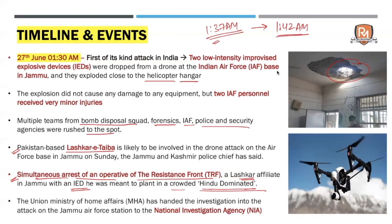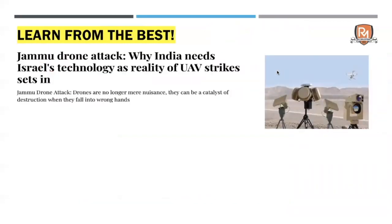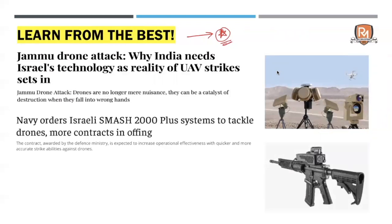After this attack happened, the MHA decided that the investigation had to be handed over to the NIA. Currently the NIA is investigating the entire case and Jammu and Kashmir police is also helping them. The biggest thing India can do is to learn from the best — and the best in this area is Israeli technology. India should definitely look at the technology that Israel is already using; they have used it multiple times with respect to Gaza. The Indian Navy has already ordered Israeli Smash 2000 Plus systems, which are systems that can be mounted on assault rifles and help target drones better, allowing personnel on the ground to take drones down.